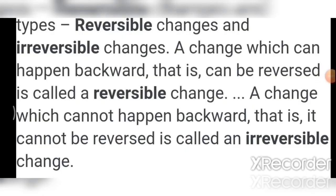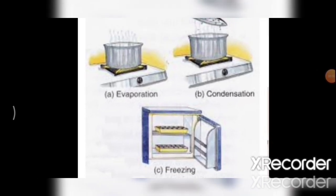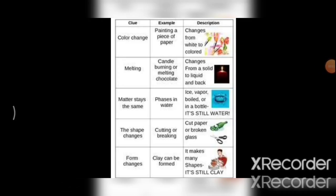Let us revise the whole process once again. There are two types of changes: reversible changes and irreversible changes. A change which can happen backward, i.e., can be reversed, is called a reversible change. Examples of reversible change include evaporation, condensation, freezing, and chopping of vegetables. Here are some more examples of reversible change where we can see color change, melting, shape changes as well as form changes.